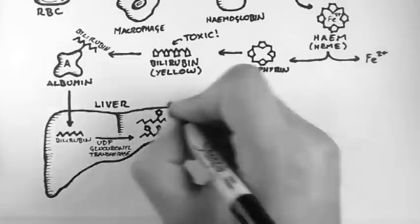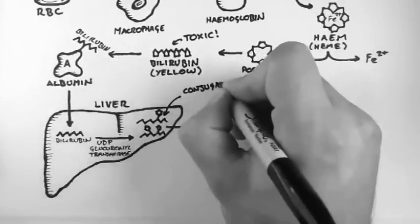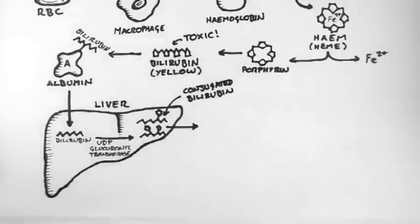We call these molecules conjugated bilirubin as opposed to the unconjugated bilirubin prior to the attachment of the glucuronic acid. We'll discuss this process in more detail in the next video.